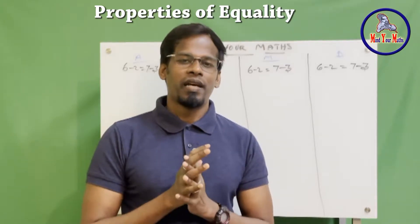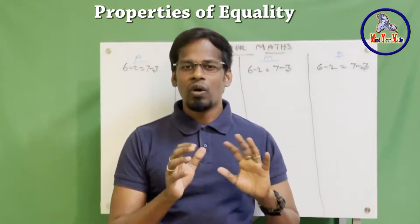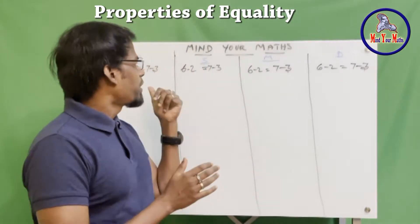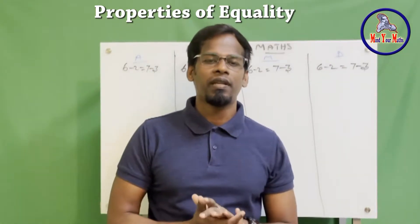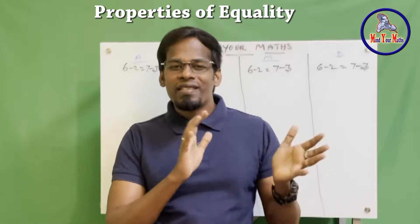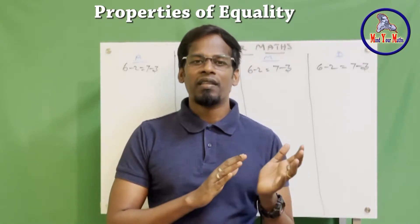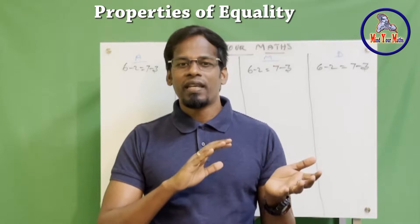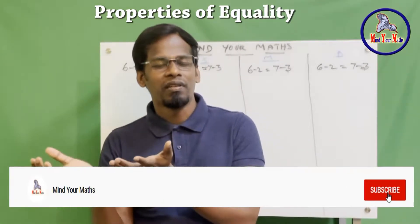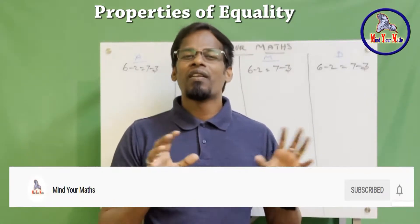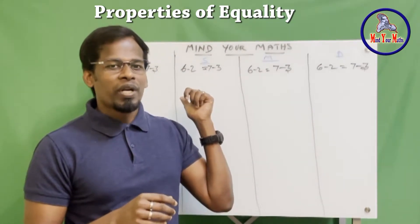What I mean by that is that in an equation, if the left-hand side is equal to the right-hand side — which is always the case — you can add, subtract, multiply, or divide by any value, but the equality of the equation will still be retained. This is used in the algebra method, where you will see X being added here and Y being added there, and a big number divided on the left-hand side as well as the right-hand side.